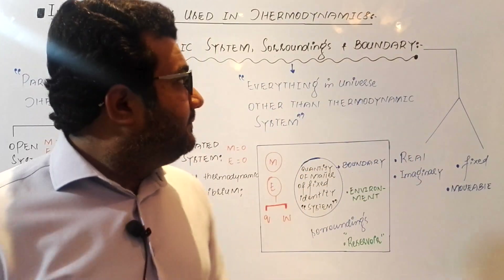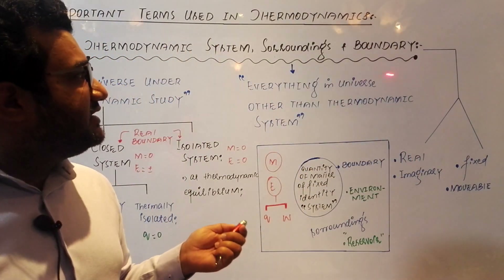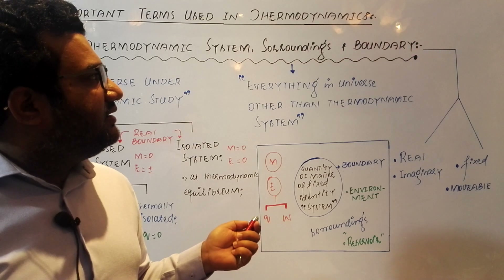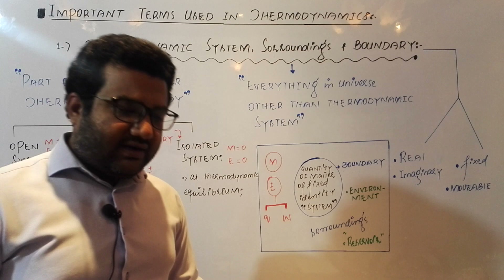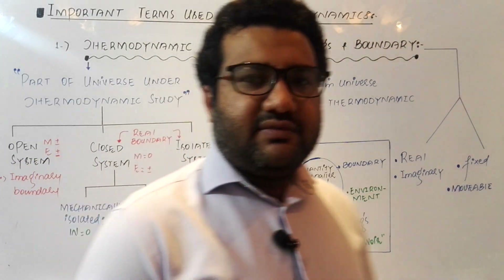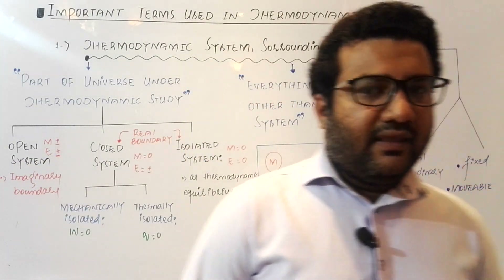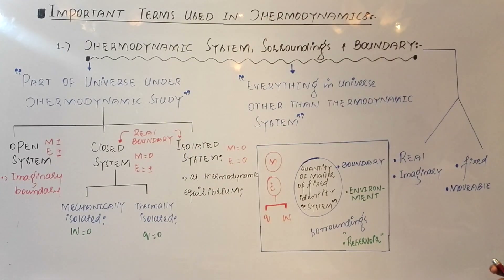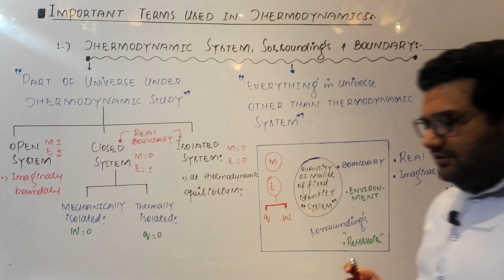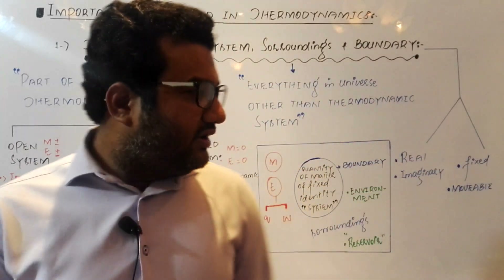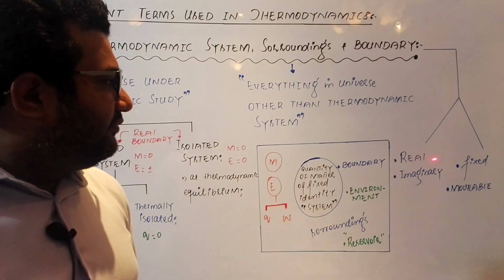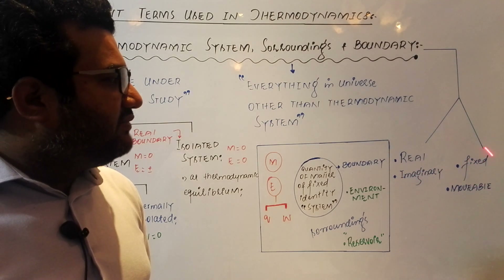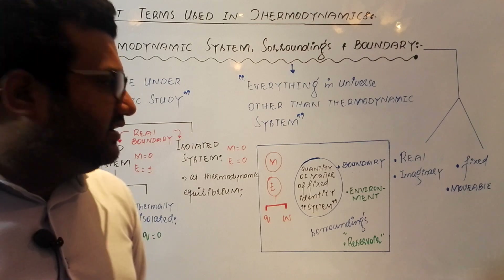The next term is the separation of the system and surroundings, and that separation is called the boundary. The boundary may be real or imaginary, and it may be fixed or movable. We will discuss what is meant by all of these in detail.